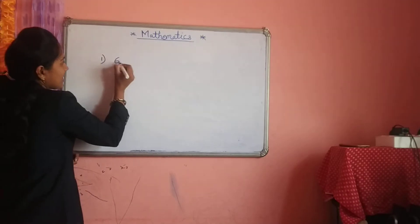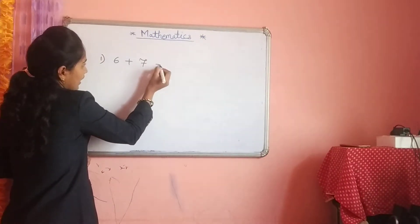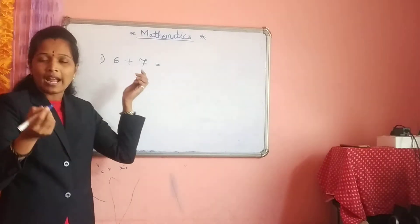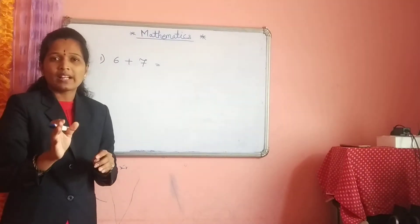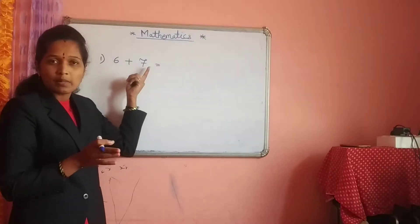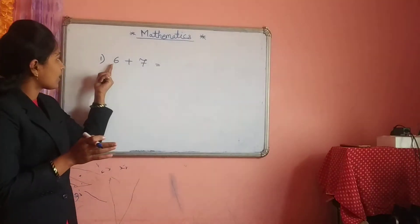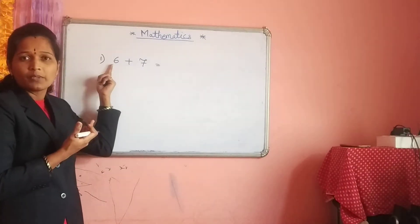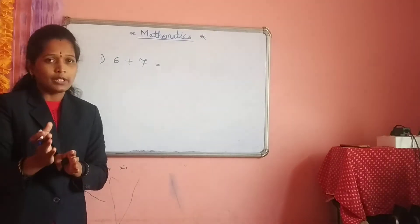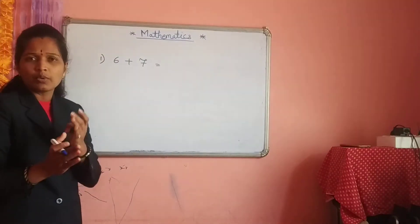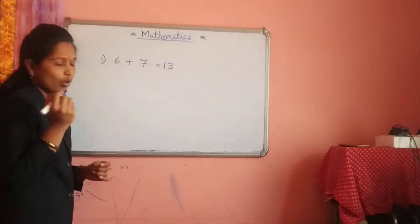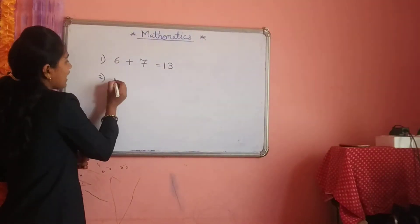Suppose numbers are given like this: 6 plus 7. It means both the numbers are positive. 6 is also positive — how to recognize a positive number? In front of the number a positive sign is there, so this is called a positive number. If you observe the number 6 with no sign, it is also called a positive number. So when both numbers are positive, we do the addition: 6 plus 7 is 13. Our answer is also positive.